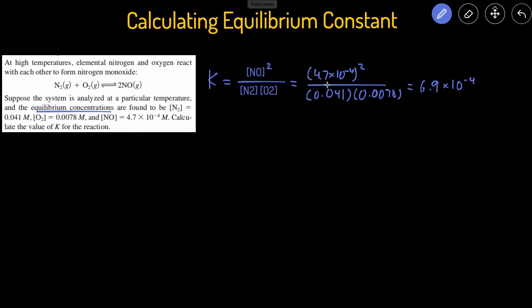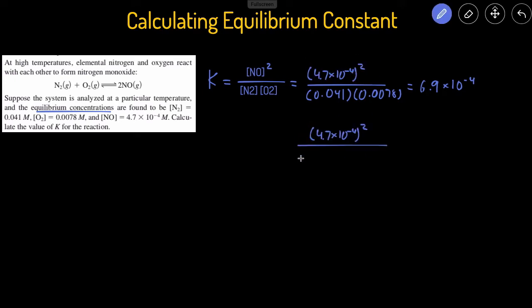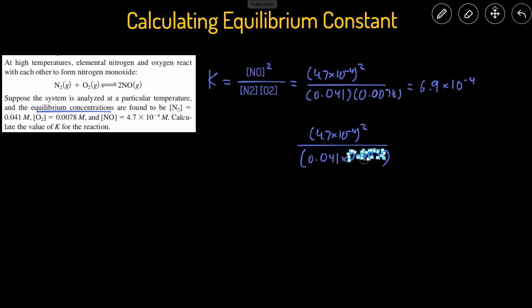We have two sig figs here, two sig figs here, and two sig figs here, so our final answer should have two sig figs. If you weren't getting that number, perhaps you missed putting parentheses on the bottom — you should write the bottom as that number multiplied by the other number inside parentheses. If you enter it like that, you should get the correct final answer.